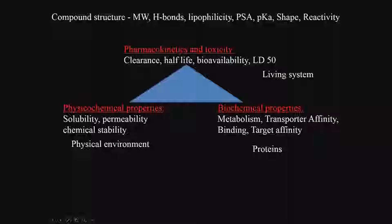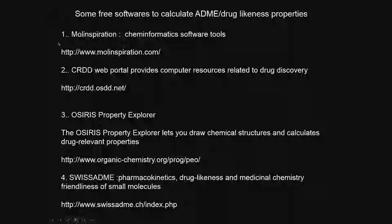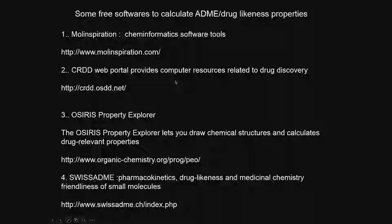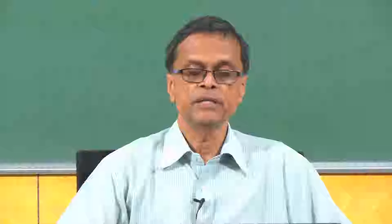We can change a few parameters, structural features, or descriptors, and they get modified at the physical level, the biochemical level, and in the living system. There are a lot of free softwares: MOL Inspiration, the CRDD web portal (computer resource related to drug discovery), Osiris property explorer, and SwissADME — all these can predict properties like solubility, metabolism, and various ADME properties and stability.